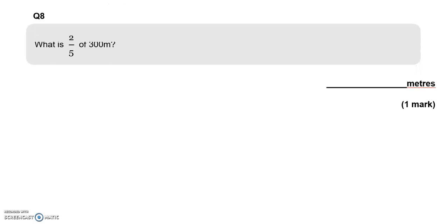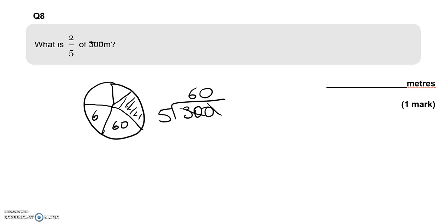What is 2 fifths of 300 meters? Let's find 1 fifth first. The total equals 300, so 300 divided by 5 gives us 1 fifth. That is 60. Each one of these parts equals 60. What about 2 of them? That is 60 and 60, which is 120, so 120 meters.